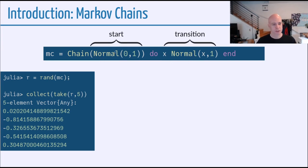So this says, first, we're going to sample a normal and then call that x. And then based on that x, our next distribution is going to be Normal(x,1). Call that x and continue. So we get this infinite sequence of values.